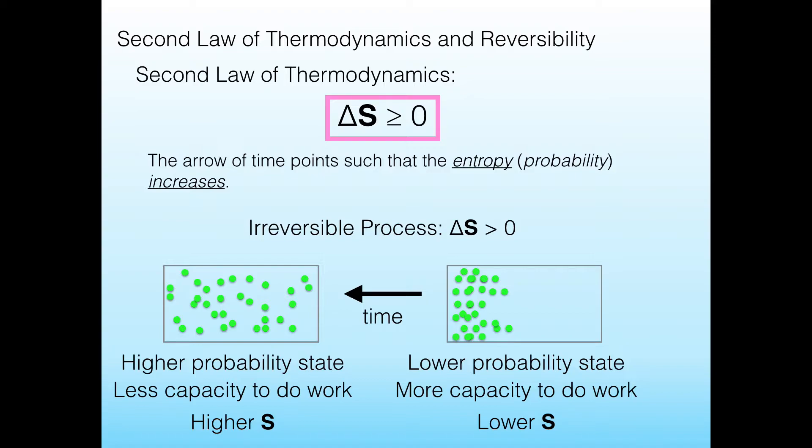The state on the left-hand side is a higher entropy state for all the reasons that we've said already. It has higher probability, it has less capacity to do work. But in addition, it also has more accessible states for all of its molecules. So these molecules in the left box could have much more ability to move than the molecules that were in a box, say half of its size. And so just increasing the volume and allowing the molecules to diffuse into a larger volume automatically increases the entropy.